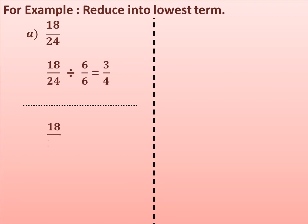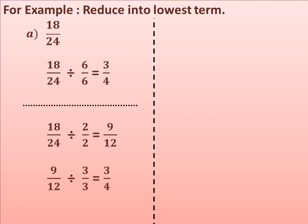Or in another way: 18 upon 24 dividing by a common factor 2 gives 9 upon 12. But 9 upon 12 is not in the lowest term, so again divide 9 upon 12 by a common factor 3 and we get 3 upon 4. So 3 upon 4 is in the lowest term because 3 and 4 have no common factor other than 1.